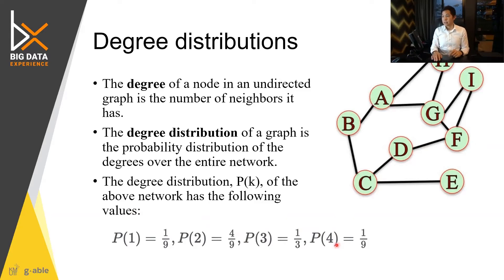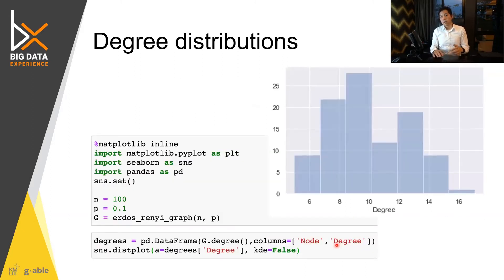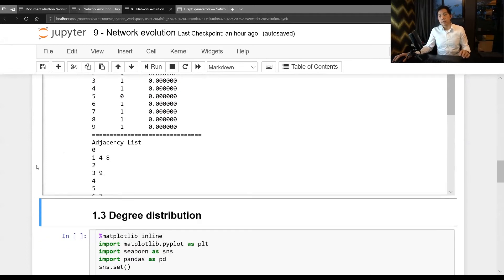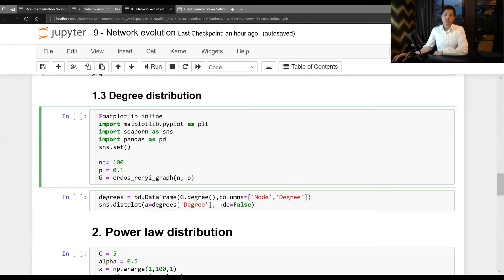So let's take a look at what is the degree distribution of Erdos-Renyi. I will switch again back to here. Now let's take a look at the degree distribution of Erdos-Renyi. Let's put it this way. I have N equal 100, P equals 0.1. This is the probability of being one.